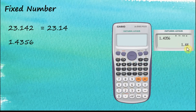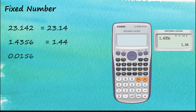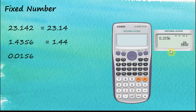The answer is rounded to two decimal places. Let's see another example: 0.0156. Key it in and press equal. The answer is given in fractions; click S↔D to convert to decimal. You can see the answer is 0.02, which is 0.0156 rounded to two decimal places.